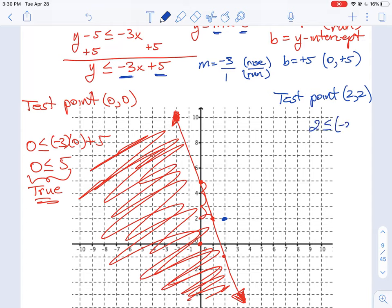So the test point is two comma two. We can plug that into our equation: two is less than negative three times two plus five. That means two is less than negative six plus five, so two is less than or equal to negative one. So is this answer true or false? Is that a true or false statement? That is false.